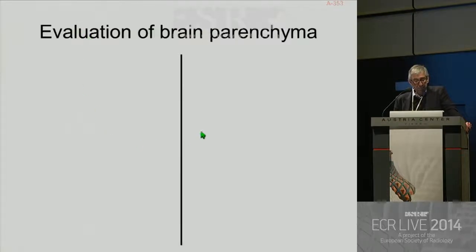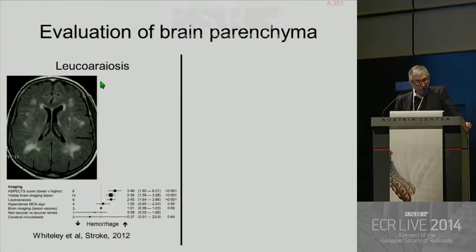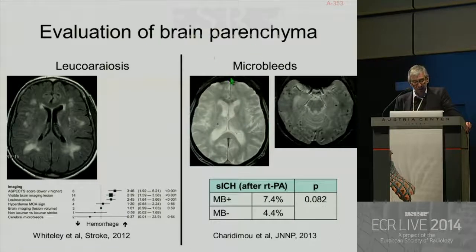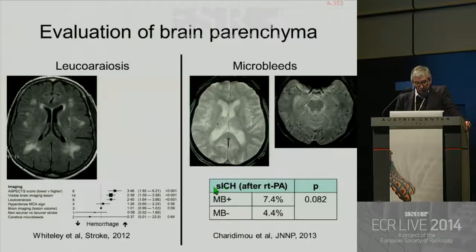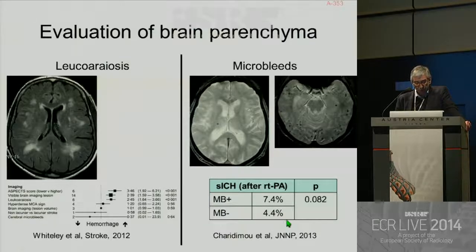Evaluation of brain parenchyma: you can depict leukoaraiosis, which is associated with increased risk of hemorrhage, but leukoaraiosis is not a contraindication to IV thrombolysis. Microbleeds can also be analyzed with MRI. The rate of symptomatic intracranial hemorrhage is increased when you have microbleeds — 7.4% compared to 4.4% when you have no microbleeds.